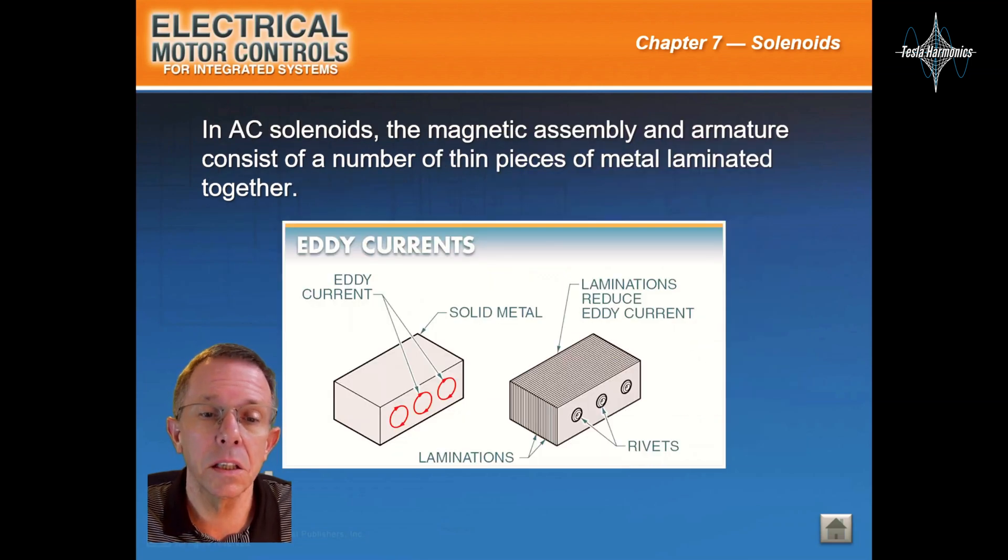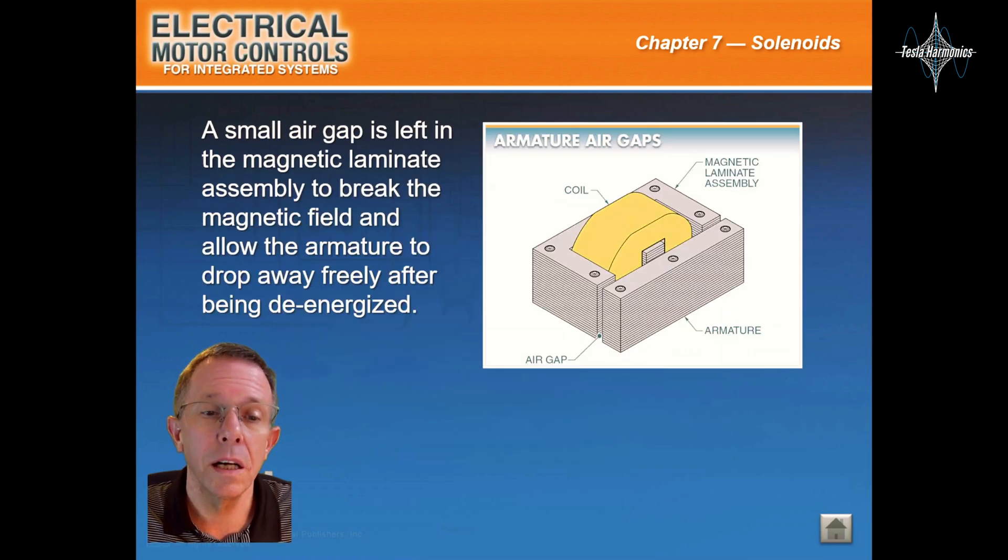In AC solenoids, the magnetic assembly and armature consists of a number of thin pieces of metal laminated together. A smaller air gap is left in the magnetic laminate assembly to break the magnetic field and allow the armature to drop away freely after being de-energized.